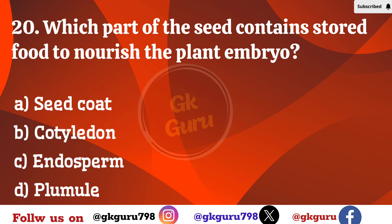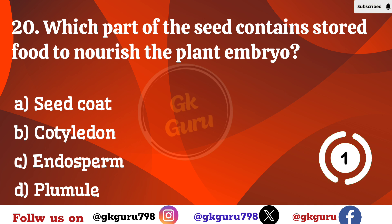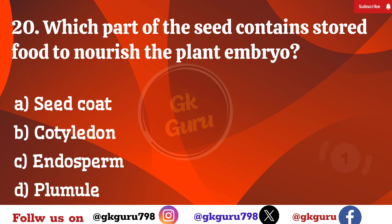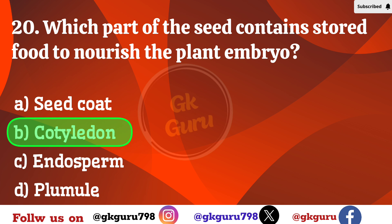Question number 20: Which part of the seed contains stored food to nourish the plant embryo? Option A: seed coat. Option B: cotyledon. Option C: endosperm. Option D: plumule. Correct answer: Option B, cotyledon.